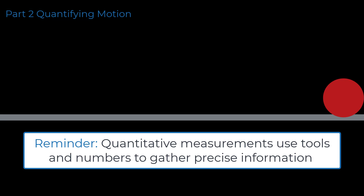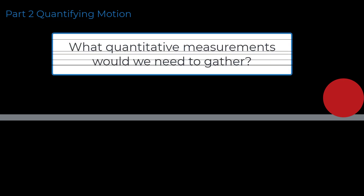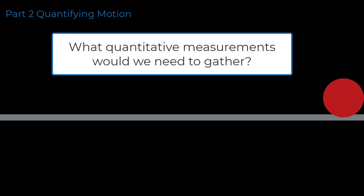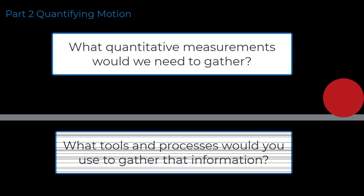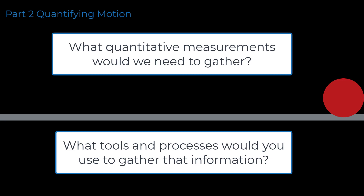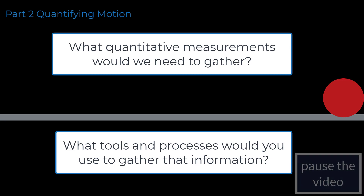To determine if the red ball's motion is constant, what quantitative measurements would we need to gather? What tools and processes would you use to gather that information? Pause the video and take a moment to answer these questions.